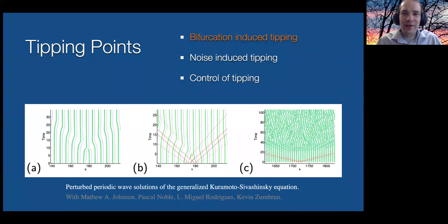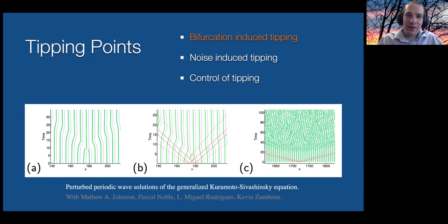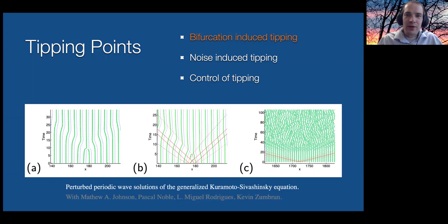As mentioned in the title, I'm talking about rigorous computation for obtaining solutions to ODE eigenvalue problems. I'd like to begin by talking about the motivation — why we would care about that. Primarily, my motivation has to do with problems regarding tipping, tipping being of several different kinds. The first is bifurcation-induced tipping.